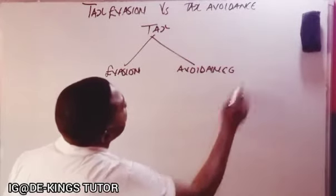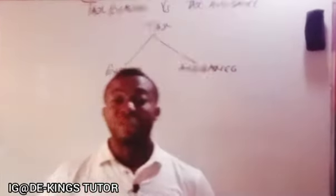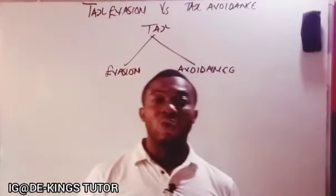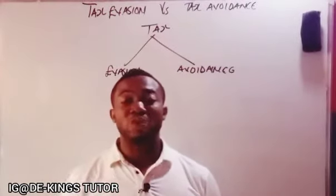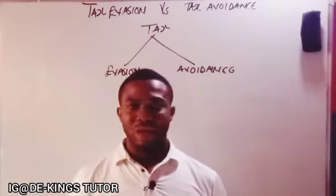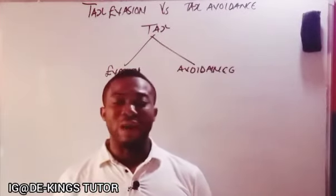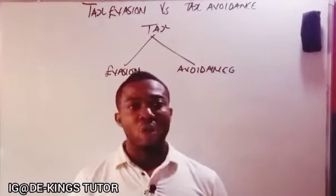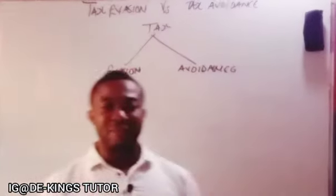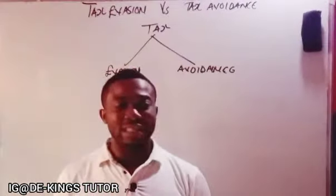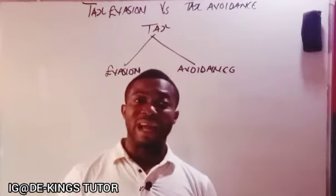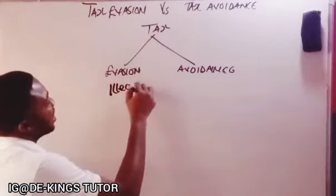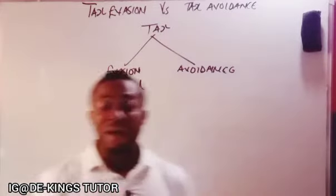Now, what does tax evasion mean? Tax evasion refers to the outright refusal to pay tax. When an individual, industry, or company refuses to pay tax, we call that tax evasion — meaning they are evading the payment of tax. This is illegal, and if found guilty, you can go to jail for it.